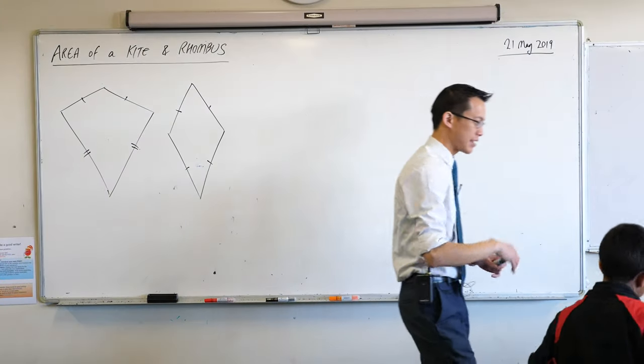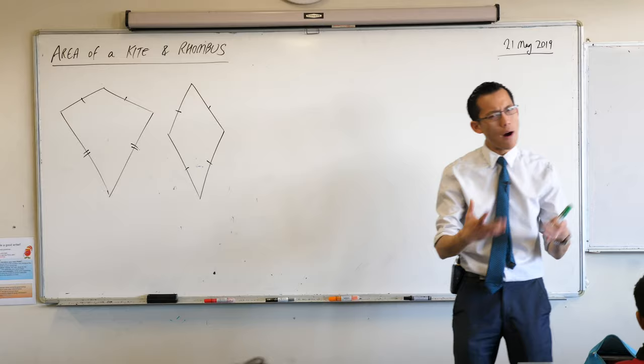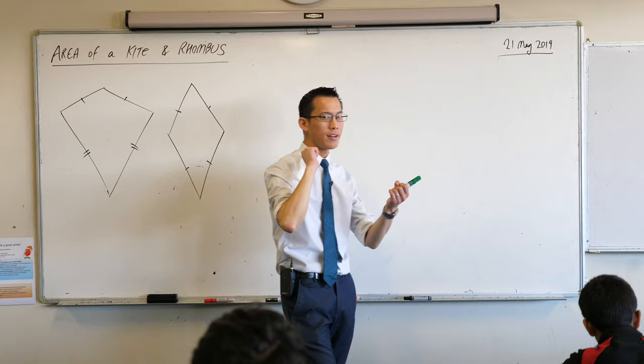We're going to get stuck right into these, no long preamble. I would love you, underneath your heading, to have a kite and a rhombus drawn. And your initial thought might be, why are we dealing with these two quadrilaterals together? We've looked at, so far, squares, rectangles, triangles, parallelograms.